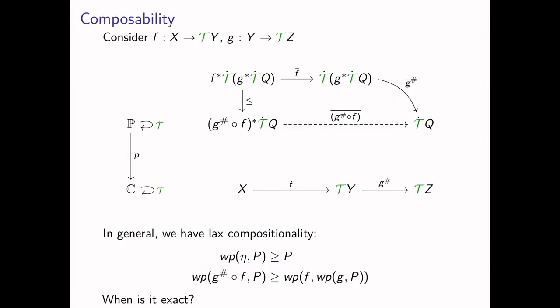Now we want to look into composability. We have two programs, f going from x to Ty and g going from y to Tz, composable via Kleisli composition, and a predicate q over z. There are two ways of computing the inverse image: directly computing the inverse image of the composition (the lower path in the diagram), or computing first the inverse image along g and then along f (the upper path). By universality of the inverse image there's always an implication, but in general there's not going to be an equality.